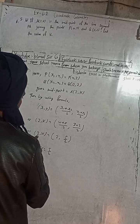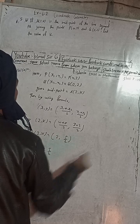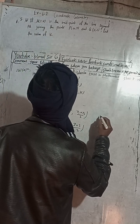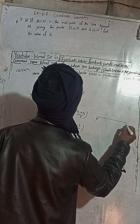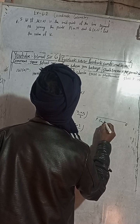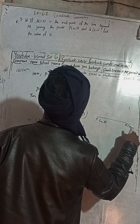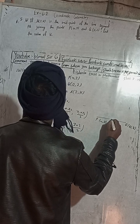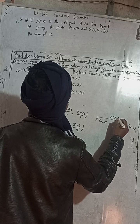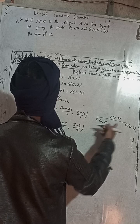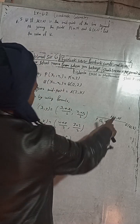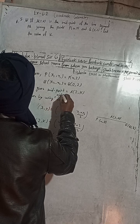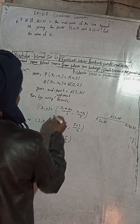To understand this, we equate x-coordinates with x-coordinates and y-coordinates with y-coordinates. Looking at the figure, P is at (4, 3) and Q is at (0, 2). A(2, k) is the midpoint of line segment PQ. Using the midpoint formula, we can proceed to find k. This is the solution to question 5b.